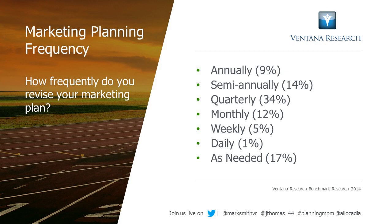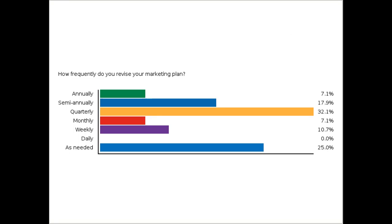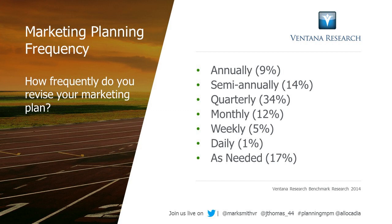The results from today's participants almost directly mirror the research we conducted last year on how marketing professionals plan. Quarterly was the highest in our research as well — 34% in today's poll — and as-needed happens quite a bit too. This is really reflective of the fact that marketing has to be very agile. There are a lot of ad hoc things that come up, and you have to balance annual planning with incremental updates, because you can't do new marketing activities without resources and budget to support them.